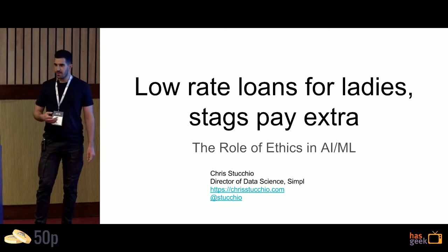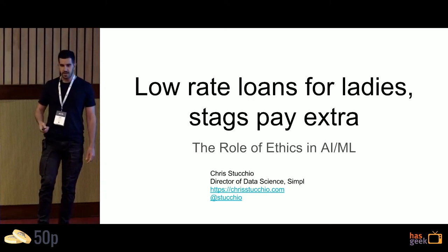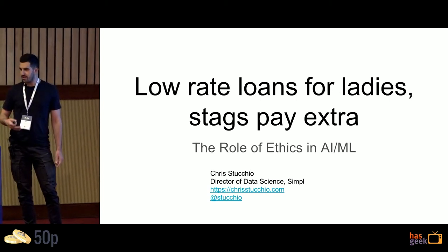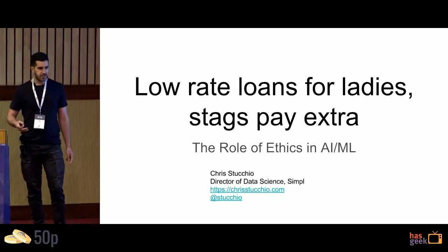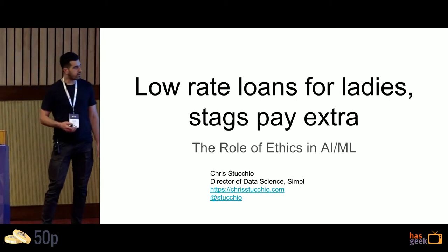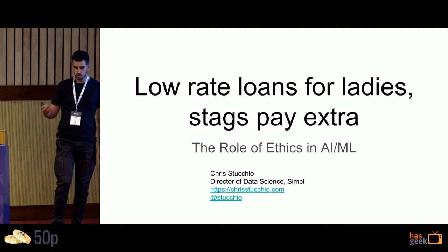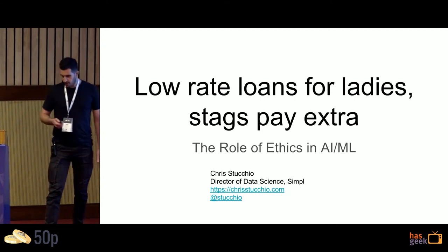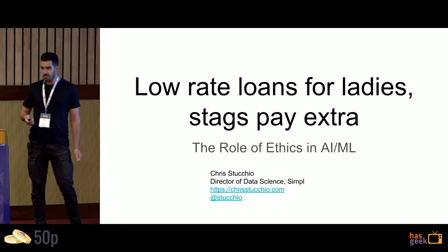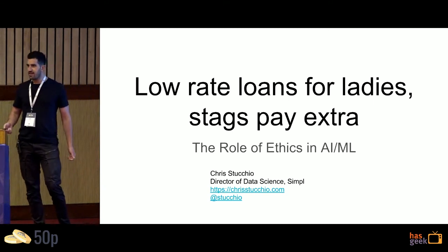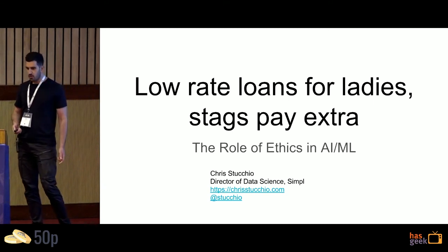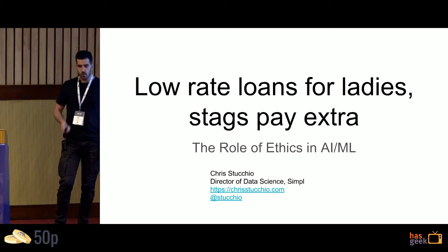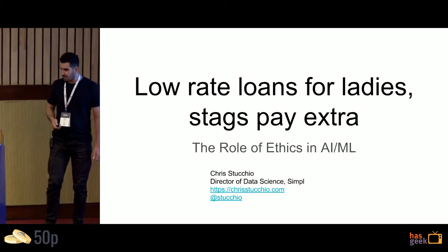We're going to mainly talk about the one that is relevant to payments — whether our lending processes or our fraud detection processes are going to be unfair to some groups in society. This is a pretty hot topic these days as people are starting to realize that algorithms don't always do what you want them to do. We'll discuss a little bit about how that happens.